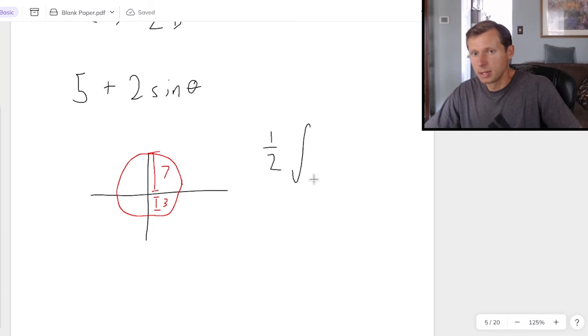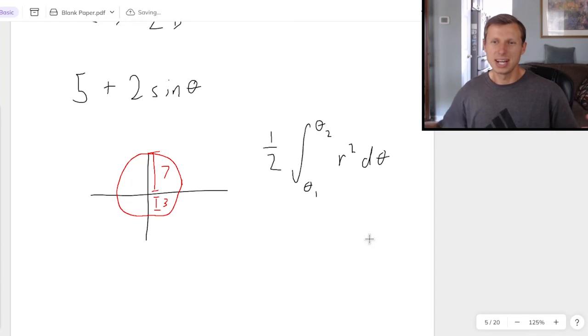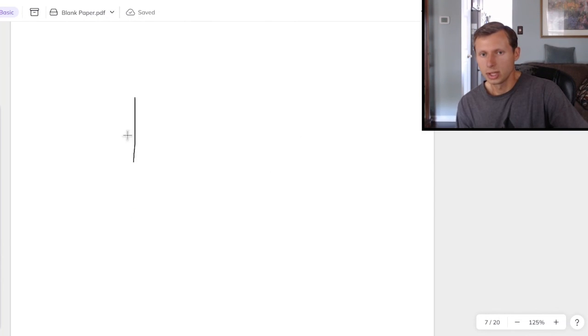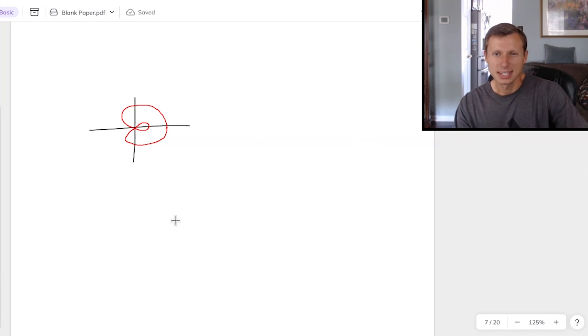I talk about it more in another video. But if this is the formula, 1 half integral from theta 1 to theta 2 of r squared d theta, the theta 1 and theta 2, if you want the whole limaçon, would be 0 to 2 pi. And then just one last thing to think about. If I give you the inner loop, for instance, like we had earlier today, and they want you to find the area of just the inner loop, then you're going to need to find the intersection points of that inner loop. How do we do that? All you need to do is set the radius equal to 0.